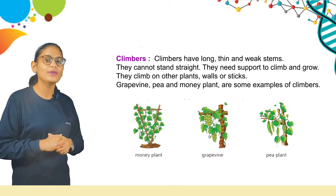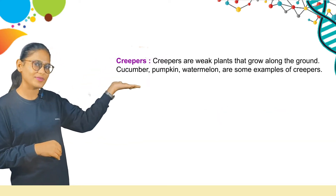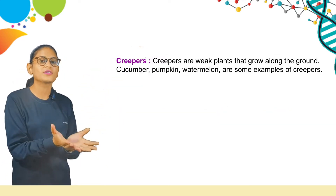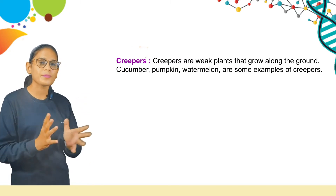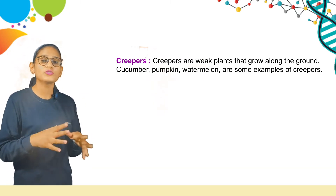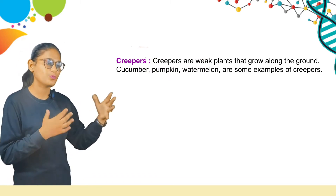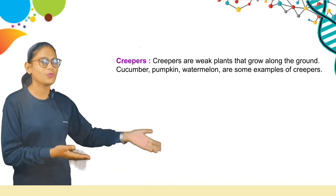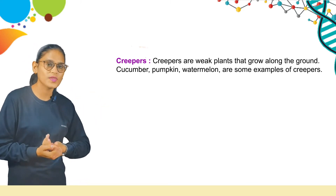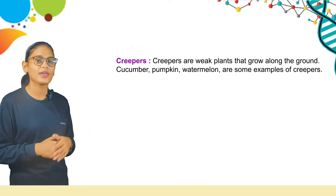These are the examples of climbers. Students, climbers are plants that need support to go up and grow. Now, here are creepers. Creepers are weak plants that grow along the ground. Cucumber, pumpkin, and watermelon are some examples of creepers. Students, creepers are plants that grow on the ground — they cannot climb even with support. So these plants are called creepers.